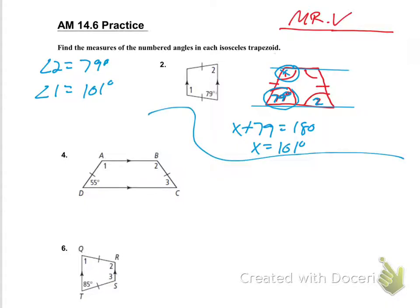Moving on to number four. I know that angle one is going to be equal to angle two, and that these lines are supplementary — not parallel, they're supplementary. Angle two and angle three are going to be supplementary, and angle one and 55 are going to be supplementary. You're given 55 here on angle D. The other base angle, angle three, is going to be equal to the same thing, because the base angles are congruent.